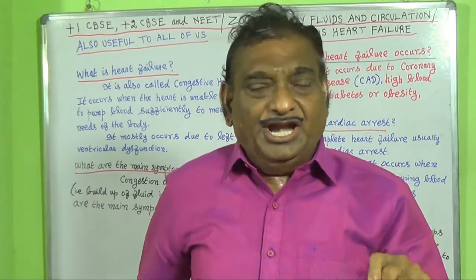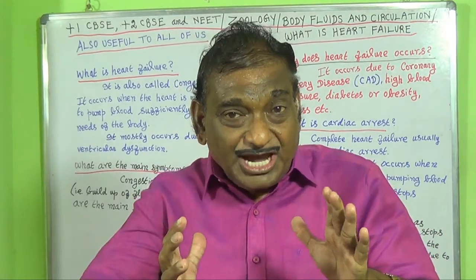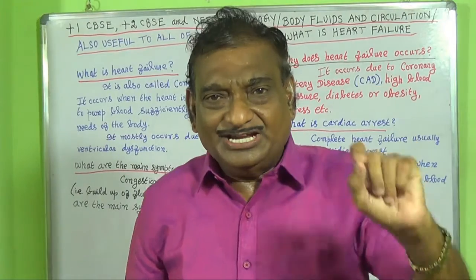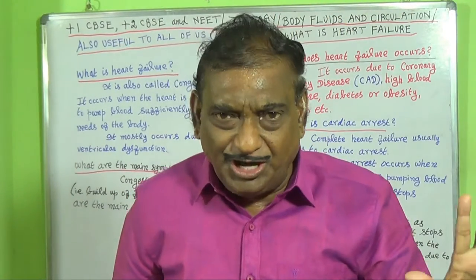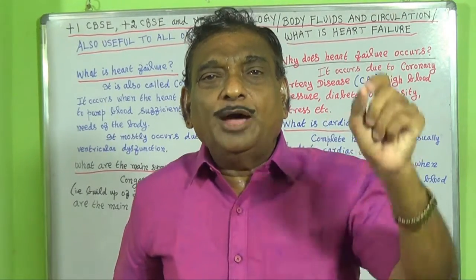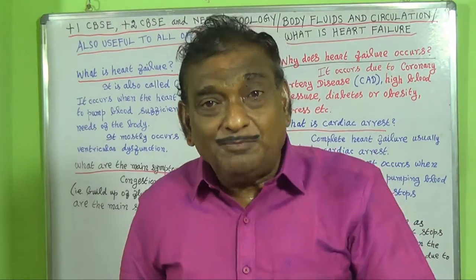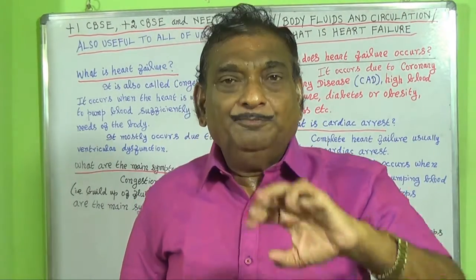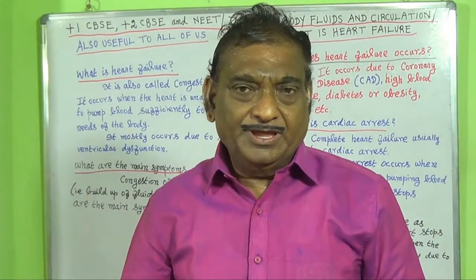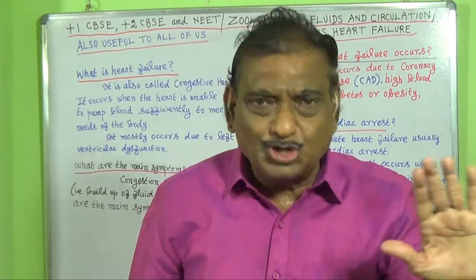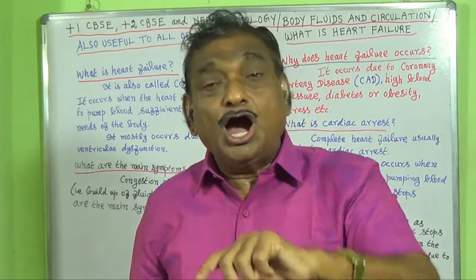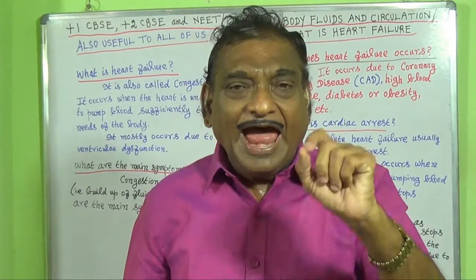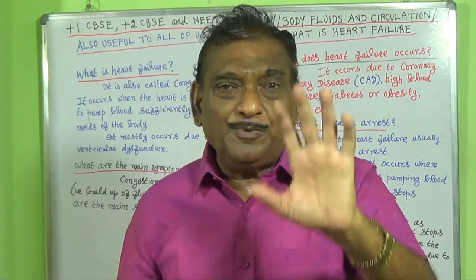All organs of the body — that is all cells of the body — need oxygen for their functioning. Oxygen is not supplied directly to the organs or cells; they are supplied only through the blood. Blood transports oxygen and carbon dioxide between the lungs and different parts of the body. Blood also transports nutrients between the digestive tract and storage sites to different parts of the body.